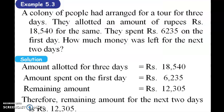A colony of people arranged a tour for 3 days. They were allotted an amount of Rs. 18,540. They spent Rs. 6,235 on the first day. How much remained for the next 2 days?